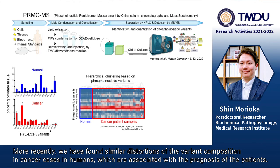More recently, we have found similar distortions of the variant composition in cancer cases in humans, which are associated with the prognosis of the patients.